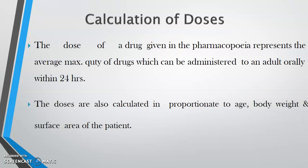So, calculation of doses. The dose of drug given in the pharmacopoeia represents the average maximum quantity of drug which can be administered to the adult orally within 24 hours.